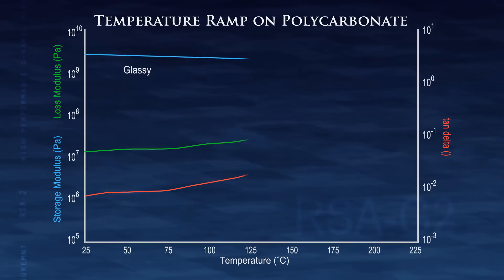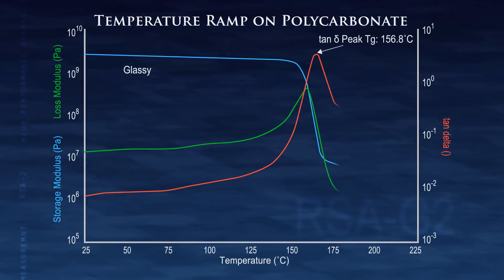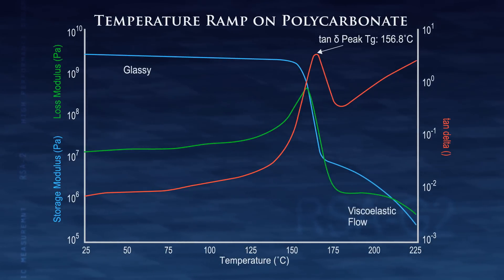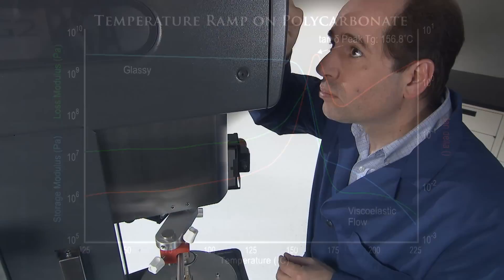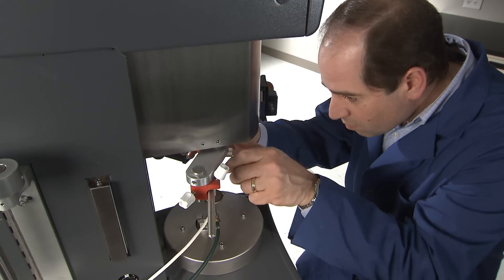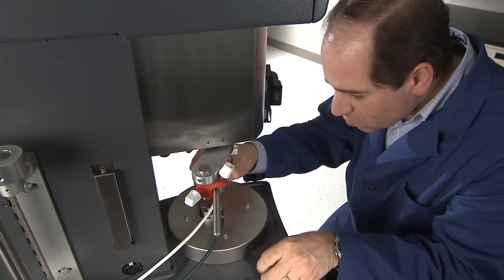The benefits are clearly demonstrated in the DMA scan on polycarbonate. Viscoelastic properties from the glassy state through to the viscoelastic flow region are measured in a single scan. No other commercial DMA is capable of capturing such a wide range of information.